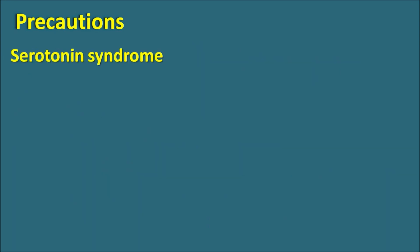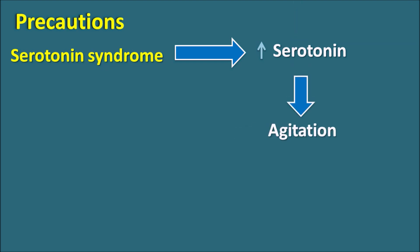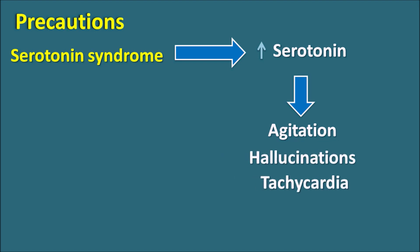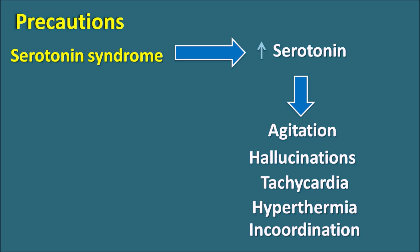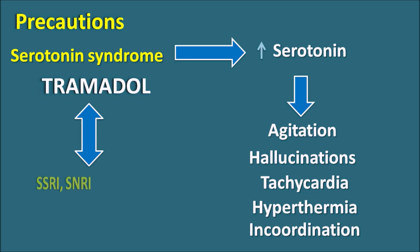A second important precaution is serotonin syndrome. This syndrome is observed with elevated levels of serotonin. When serotonin levels are excessively increased within the central nervous system, it can produce symptoms like agitation, hallucinations, tachycardia, hyperthermia, incoordination, and mental confusion. Tramadol can increase the risk of serotonin syndrome, and this risk is further increased with other drugs like SSRIs, SNRIs, TCAs, and MAO inhibitors which raise serotonin levels within the CNS. Tramadol should be carefully co-administered with all these drug categories to prevent severe serotonin syndrome.